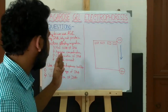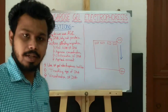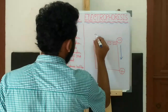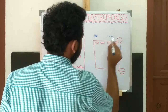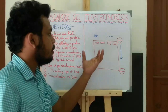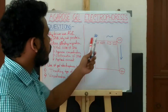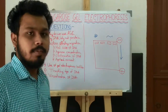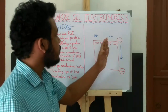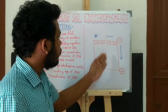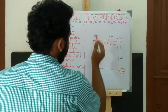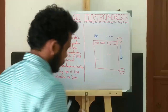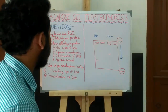Now, what is the effect of DNA conformation on migration? Suppose a supercoiled DNA and a relaxed DNA are added to the agarose gel. The supercoiled DNA will migrate more easily because it is a more ordered, compact structure, while the relaxed DNA will migrate less, giving a band farther from the well compared to the relaxed DNA band.